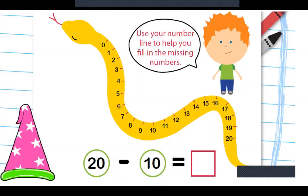Here, use the number line and fill in the missing numbers. Here children, 20 minus 10. You can use the number line. From 20 you are moving backward. 20 from 20 to 10: 19, 18, 17, 16, 15, 14, 13, 12, 11 and 10. So the answer is 10. So 20 minus 10 is 10.